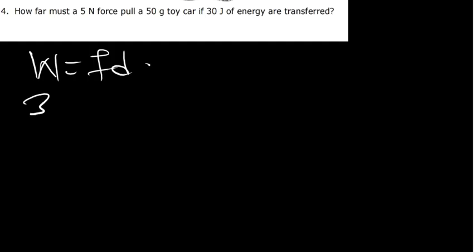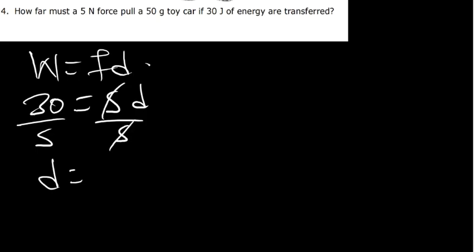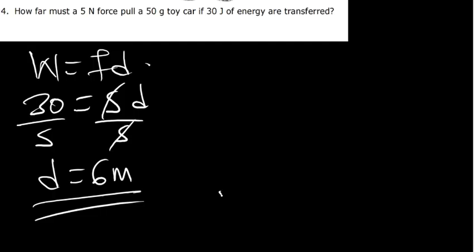Question 4 is saying: how far must a 5 Newton force pull a 5-gram toy car if 30 joules of energy are transferred? We use work equals force times distance. Work is 30, force is 5, and we want the displacement. Dividing both sides by 5, the displacement is 30 ÷ 5 = 6 meters. That is it for question 4.